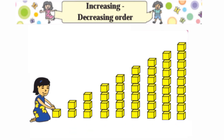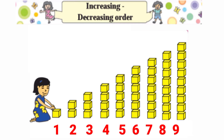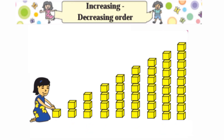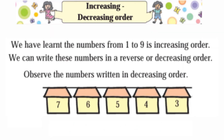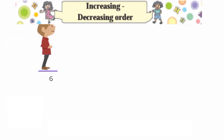Chote se leke bade ki taraf hum usko arrange kar sakte hain. For example, if the numbers five, seven, and three are there, we can arrange them in increasing order: the smallest number three comes first, then five, then seven. So this way we can do it. We have learned numbers from one to nine in increasing order.